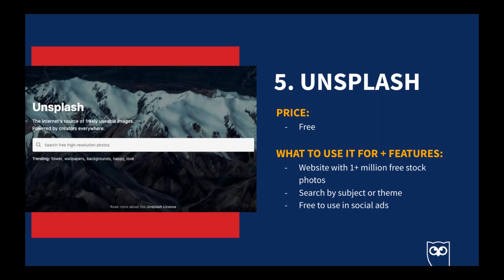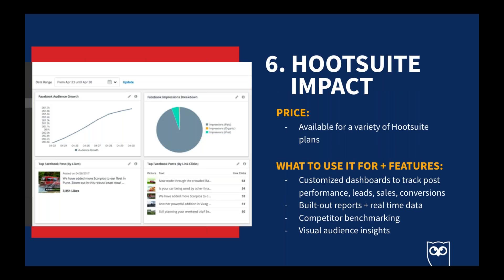Unsplash is a free website with over one million free stock photos — you can search by subject or theme and images are usually up to date. You can use these images in your social ads too, free of copyright. Hootsuite Impact includes a customized dashboard to track post performance, leads, sales, and conversions. You can build reports for higher-level audiences like executives or gather real-time data on a post-by-post basis. It has features for competitor benchmarking and visual audience insights. The Hootsuite team uses this daily to track metrics on social posts across all networks.